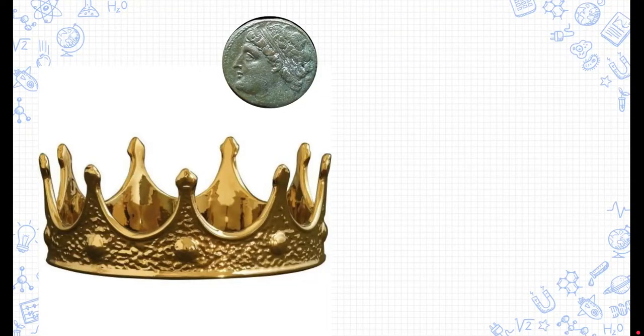Rumors started to spread that the king was being duped by the blacksmith. They said that the blacksmith took the lump sum of gold and doped it with certain types of unprecious metals and kept some of the gold for himself.